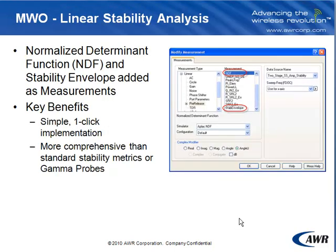On the linear side, additional stability analysis is provided that goes beyond the traditional metrics we have, as well as the gamma probe. This implements the normalized determinant function, and stability envelope measurements are added as well. The key benefit is that it's really just a one-click implementation to get you from your simulation to this sort of linear stability analysis.